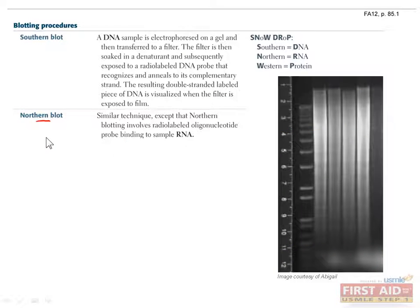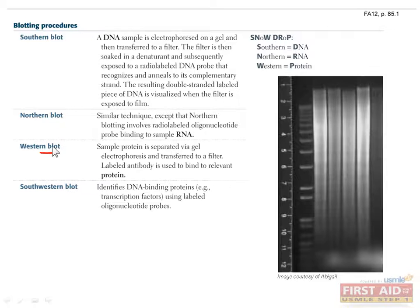A northern blot is basically the same thing, except now instead of running DNA through your gel, you're looking at RNA. A western blot also uses a similar concept, except now you're looking at proteins. Since proteins can't be targeted using complementary strands, you instead have to use a labeled antibody which is specific for your protein of interest. One example of when western blots are used is to confirm the diagnosis of HIV after it's been detected by ELISA, which we'll talk about shortly.